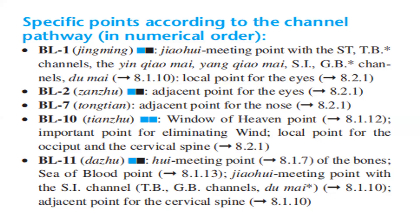Bladder 2 is the adjacent point for the eyes. Bladder 7 is the adjacent point for the nose. Bladder 10 is the Window of Heaven Point and an important point for eliminating wind.